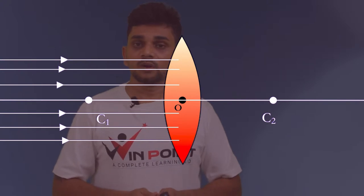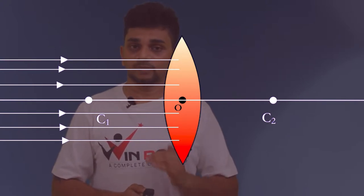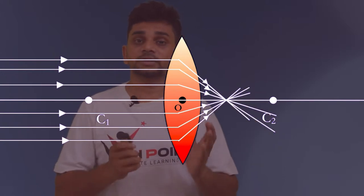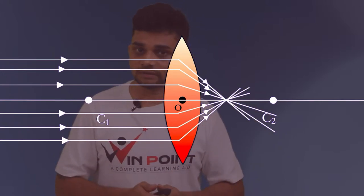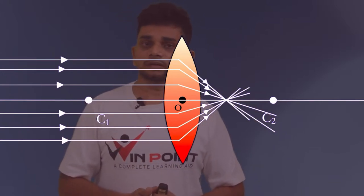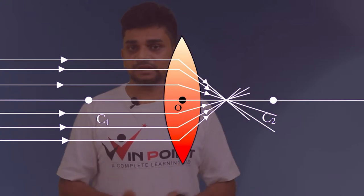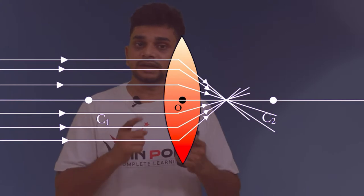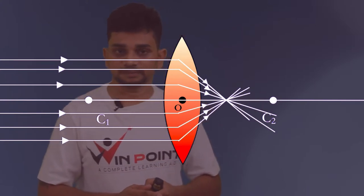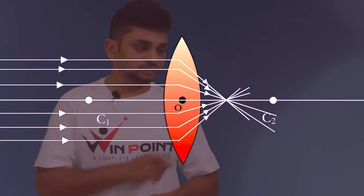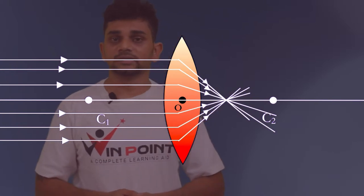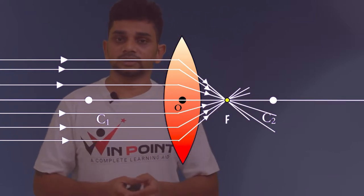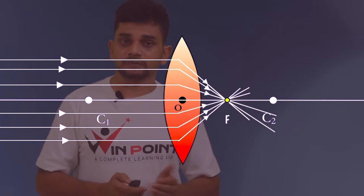After refraction, all the light rays will concentrate at a point. This point is known as the principal focus of a convex lens. The light rays parallel to the principal axis, after refraction, will meet at a point on the principal axis. This point is known as the principal focus of a convex lens, and it is represented by the letter F.